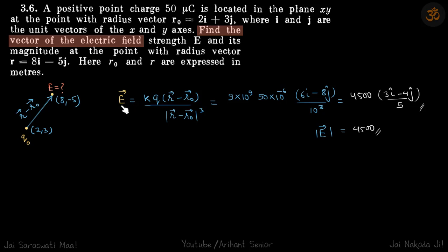The electric field in vector form is kq times (r vector minus r0 vector) divided by the magnitude of (r vector minus r0 vector) cubed. Here the charge is placed at r0 and we are finding the electric field at r.